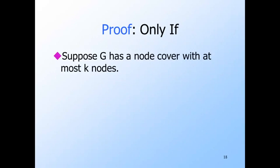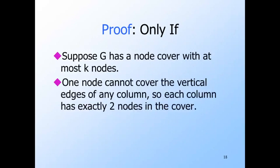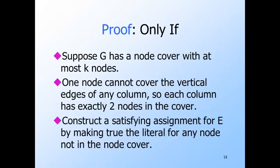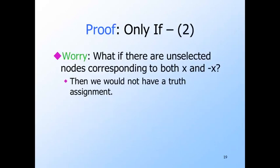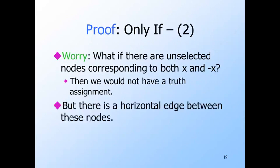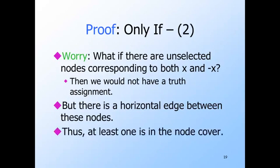The converse follows a similar outline. Suppose G has a node cover with K or fewer nodes. Since all vertical edges must be covered, there must be at least two selected nodes in each column. From the nodes not selected for the node cover, we can figure out a satisfying assignment for E. If there is an unselected node corresponding to literal X, make propositional variable X true; if there is an unselected node corresponding to literal not-X, make X false. This assignment is consistent because there is a horizontal edge between nodes for X and not-X, so at least one must be in the node cover — they cannot both be outside it. Thus we have a consistent satisfying assignment, and the expression E is in 3SAT whenever G has a node cover of size up to K.